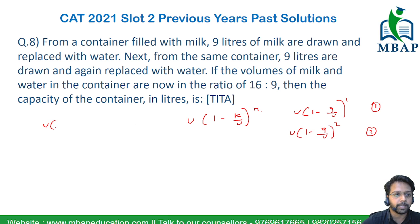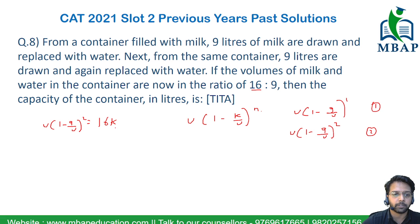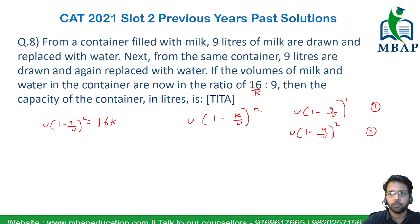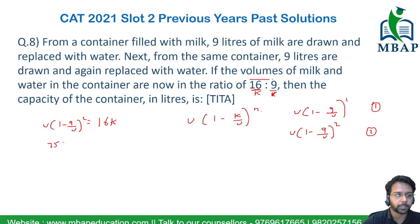So V times (1 minus 9 upon V) squared gives the amount of milk left, which is 16K. The volume of water is 9K, so the total volume is 16 plus 9, which is 25K. This whole expression becomes: 25K times (1 minus 9 upon V) squared equals 16K. Dividing both sides by 25K gives (1 minus 9 upon V) squared equals 16 upon 25.